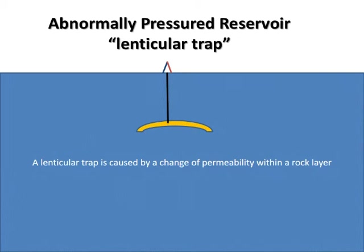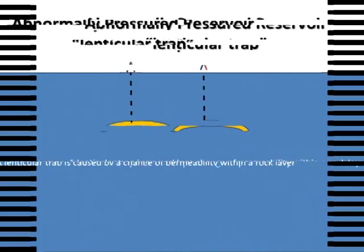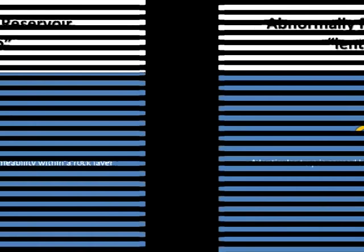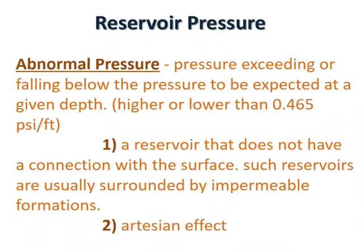A lenticular trap is caused by a change of permeability within a rock layer. Abnormal pressure is pressure exceeding or falling below the pressure expected at a given depth — higher or lower than 0.465 psi per foot.